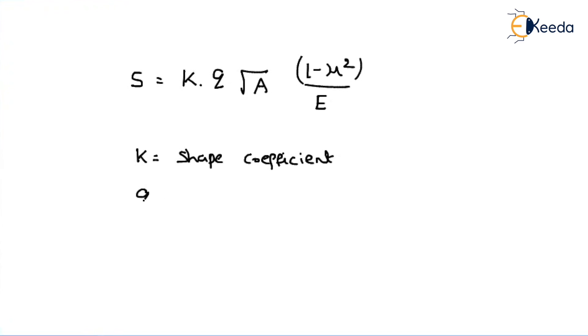And Q is nothing but net pressure applied on the soil. In reality, we are applying through the foundation, but he has derived this equation by imagining it as a slab. And what about A? A is nothing but area of bearing slab, but in general, we have to consider it as area of footing.